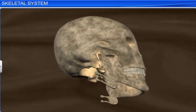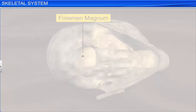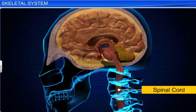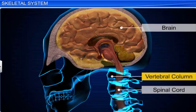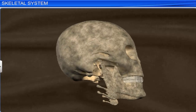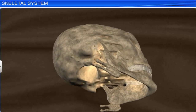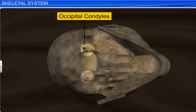The skull also has a large hole called the foramen magnum, through which the spinal cord, after emerging from the brain, continues into the vertebral column. The skull articulates with the vertebral column with the help of two occipital condyles.